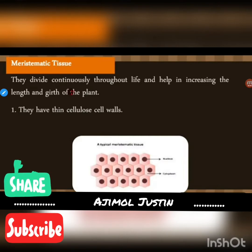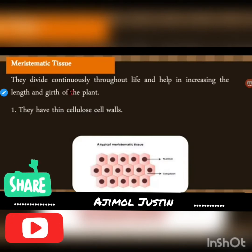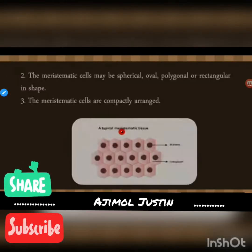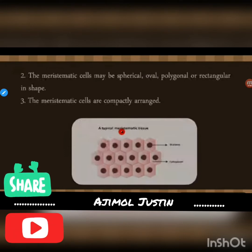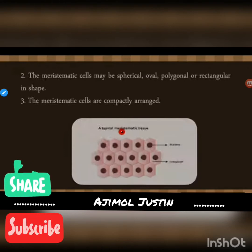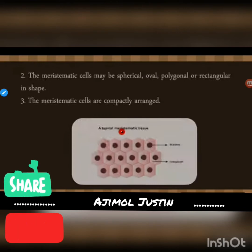At the center you have a nucleus — the brown spots you see are the nucleus — and the nucleus is surrounded by a cytoplasm. Meristematic cells may be spherical, oval, polygonal, or rectangular in shape. In this figure you can see it is polygonal; in certain other plants it will be spherical, oval, or rectangular.